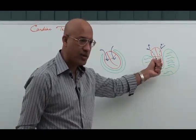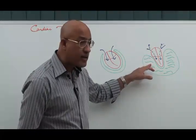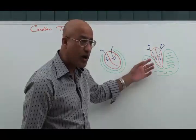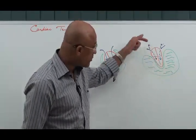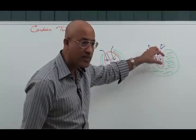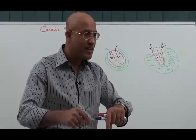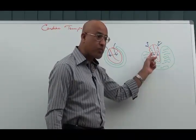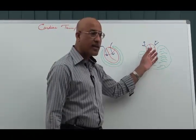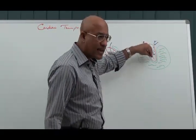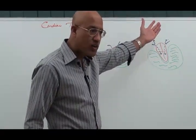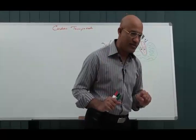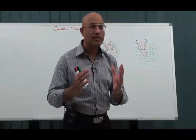If the fluid strangulates the cardiac chambers and intrapericardial pressure becomes more than the filling pressures in the heart, then cardiac filling will be compromised. Heart is a pump — if you cannot fill in, you cannot get blood out. If venous return to the heart is compromised and the heart is not filling, then cardiac output will drop, hemodynamic stability will be lost, and we say there is cardiac tamponade.